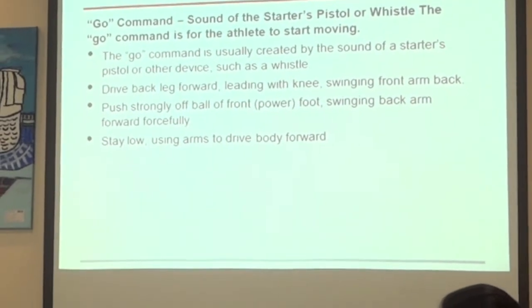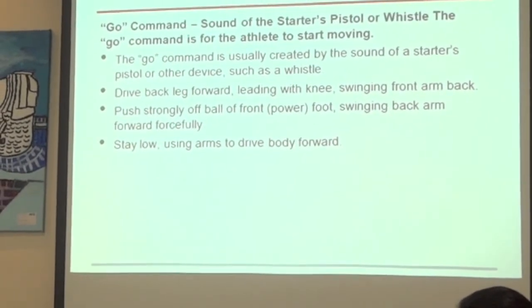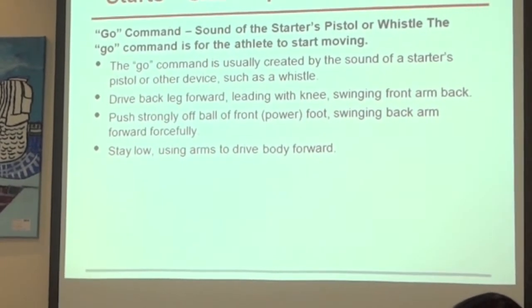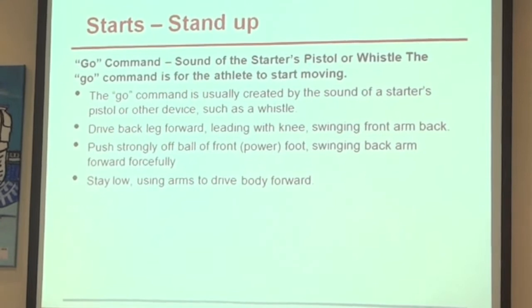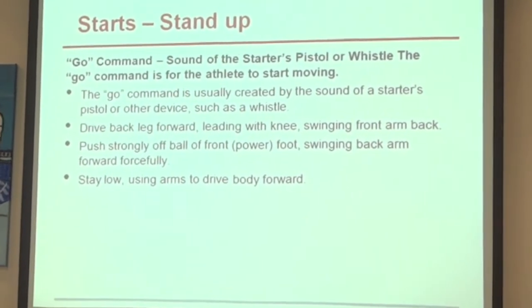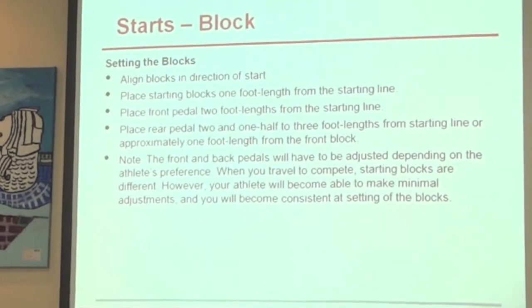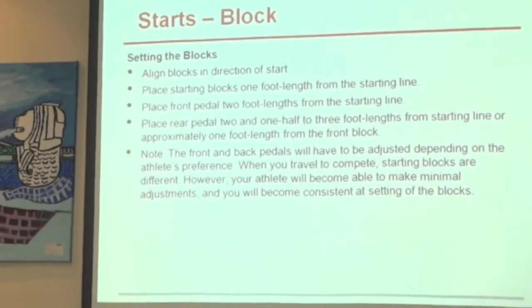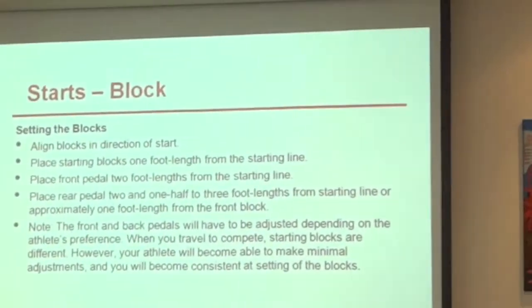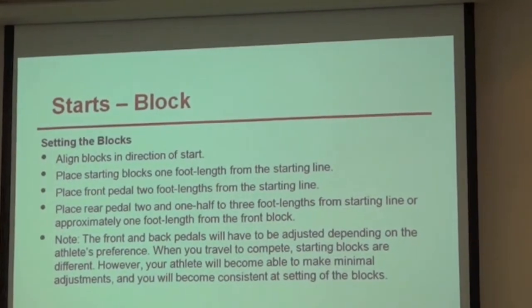Drive the leg forward, leading with the knee, swinging the front arm back. Push strongly off the ball of the front foot, swinging the back arm forward. Stay low, using arms to drive the body forward. Align the block in the direction of the start. Place starting blocks one foot length from the starting line, the front pedal two foot lengths from the starting line, and the rear pedal two and a half to three foot lengths from the starting line, or one foot length from the front block.